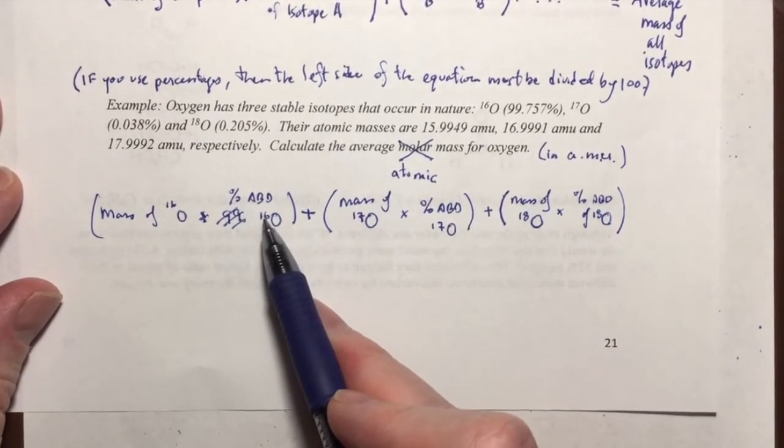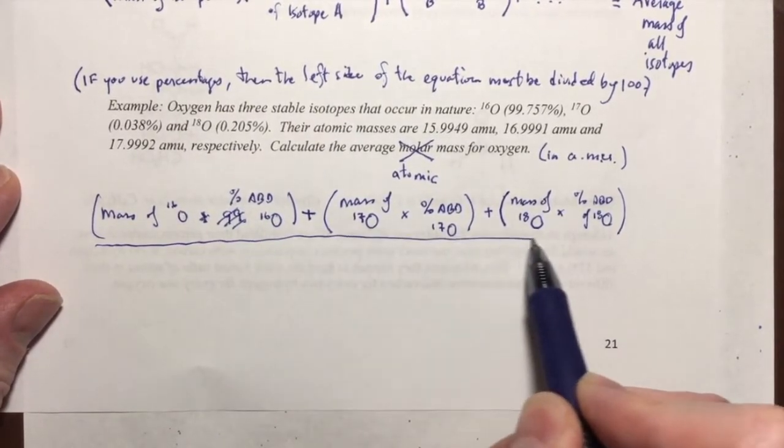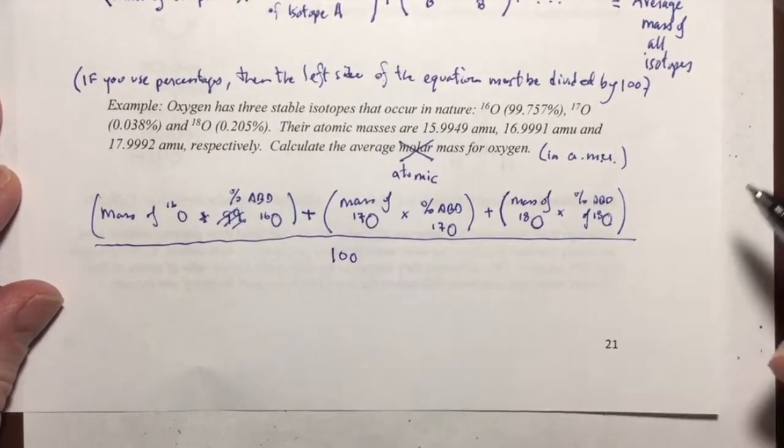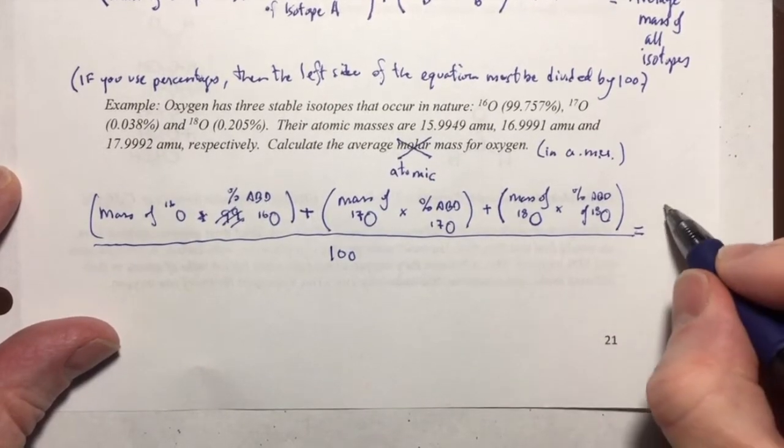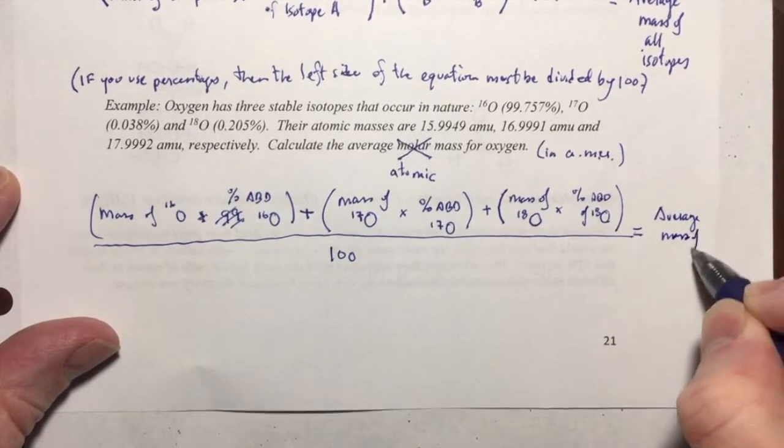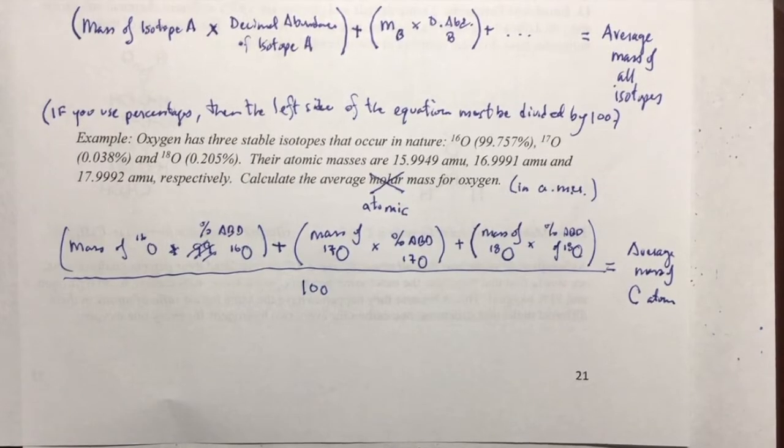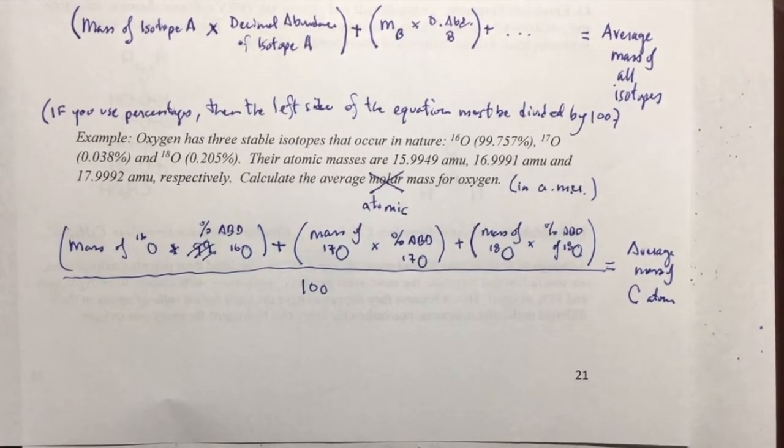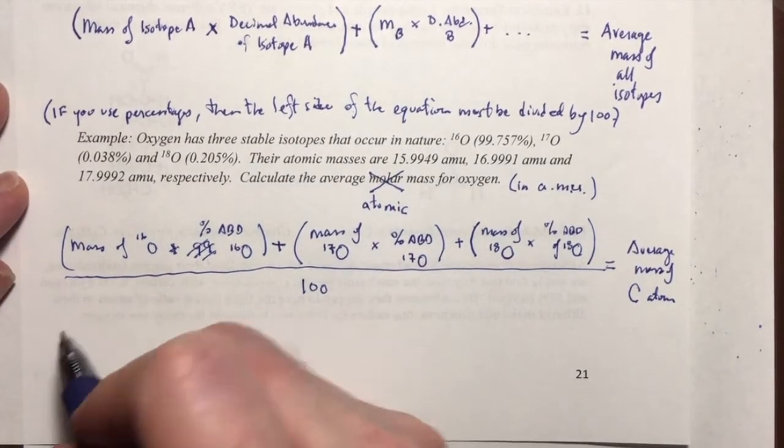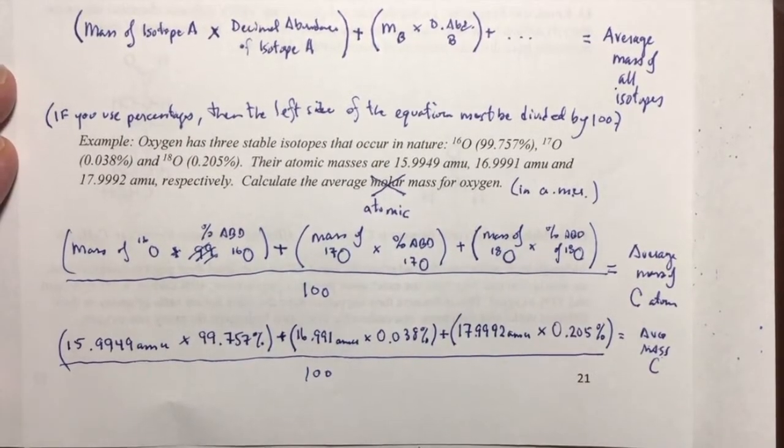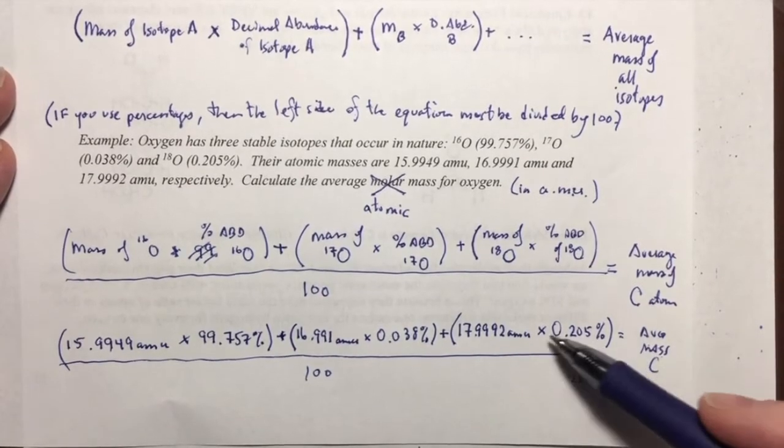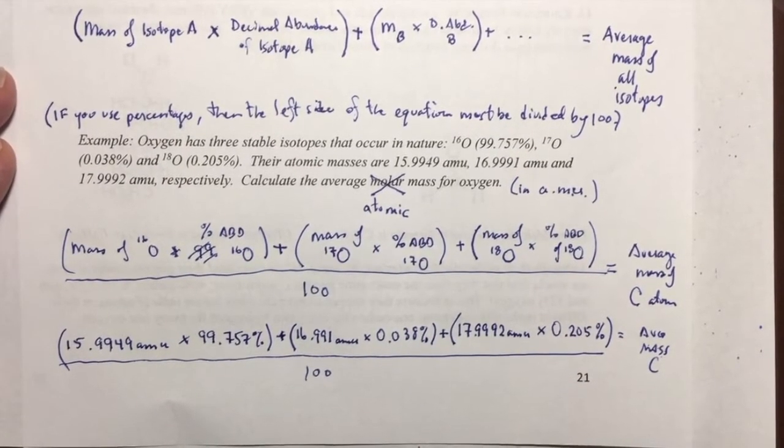Because I've used percentages for the abundance and not decimals, what do I have to do to this whole side of the equation? I have to divide it by 100 to get those percentages to be decimals. And then this gives me the average mass of a carbon atom. So, there's my equation that I'm going to use. And now I start plugging in numbers. I'll skip a bit so that you don't have to wait until I write all the numbers.